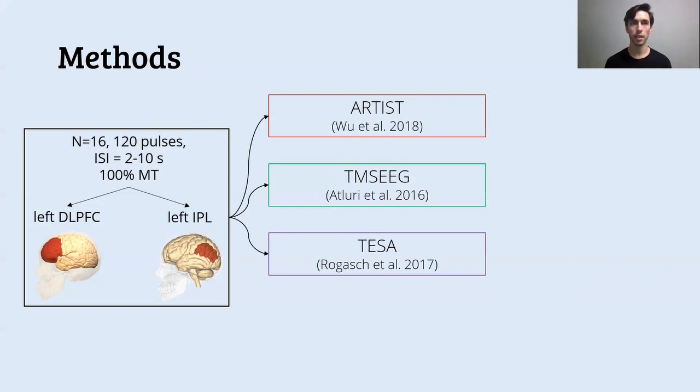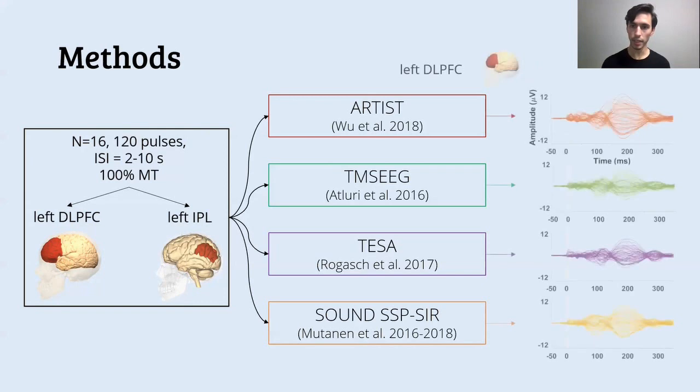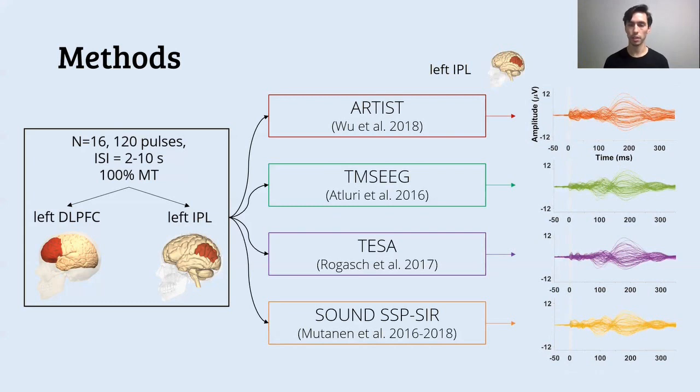The third one is TESA, which is actually a set of functions that a researcher can use to build a processing pipeline. We used the default pipeline that was suggested. And lastly, sound SSPCR, which as opposed to the other ones, doesn't use any blind-source separation algorithm, but it uses sound and SSPCR, which are new sophisticated algorithms that allow to clean the TMS-evoked signal without any ICA. And here are the resulting TEPs, for example, in the dorsolateral prefrontal cortex. So we had four outputs since we had four processing methods. Here for the dorsolateral prefrontal cortex, and here for the inferior parietal lobule.